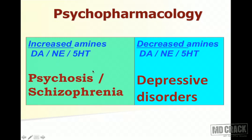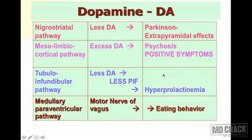The next slide differentiates psychosis from depressive disorder. In psychosis there is elation and high mood, due to increased amines in the brain — dopamine, norepinephrine, and serotonin (5-hydroxytryptamine). Example: schizophrenia. In depression, these catecholamines become remarkably low — less dopamine, less norepinephrine, or less 5-HT — which manifests as depression.